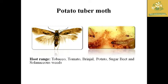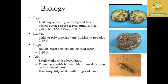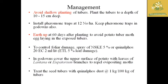The host range of the potato tuber moth varies across solanaceous species — it also affects tobacco, tomato, brinjal, potato, sugar beet, etc. Regarding biology: eggs are laid singly; larvae are pale greenish to pinkish at pupation, with a pupal period of around 7 to 15 days depending on climatic changes. The pupa is in a silken cocoon on exposed tubers with a pupal period of around 8 to 10 days. The adult is a small moth with a silvery whitish body and dirty white fringes on the hairs of its wings.